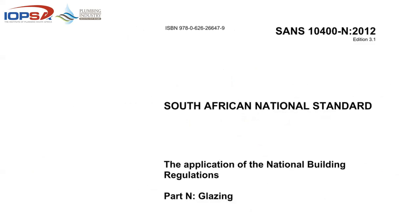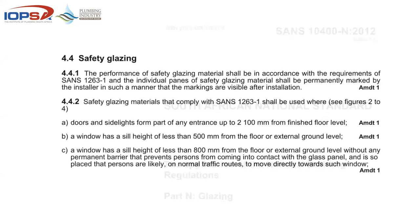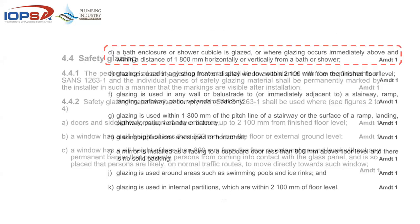Part N is glazing. Glazing is done by a specialist to a specific spec that was part of the building plan and design. Not too much in it for the plumber, other than if we are supplying and fitting a bath enclosure or shower cubicle — if it's glazed, or any glazing immediately above or within 1800mm horizontally or vertically from a bath or shower, it will be safety glass. You can't have people slipping on normal plate glass.